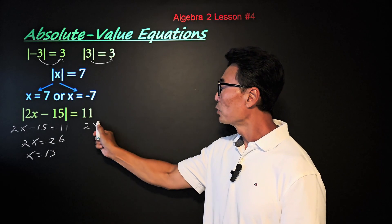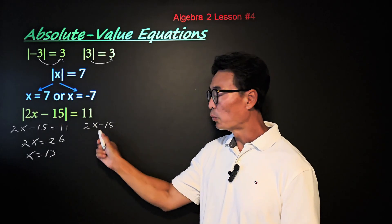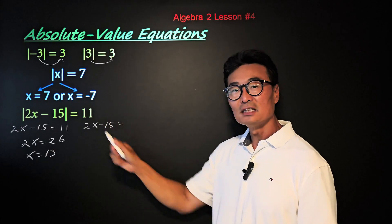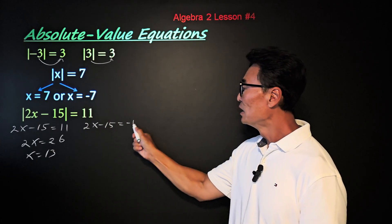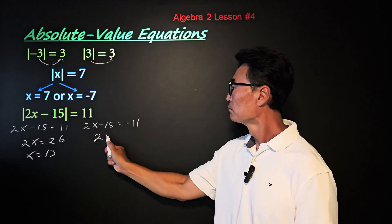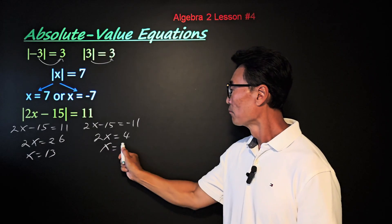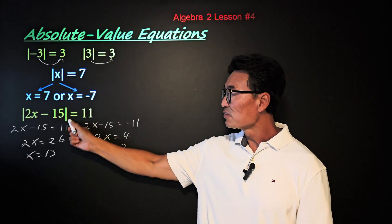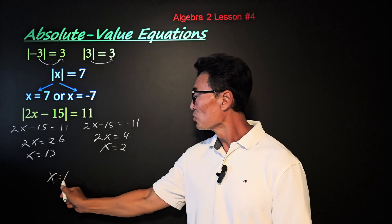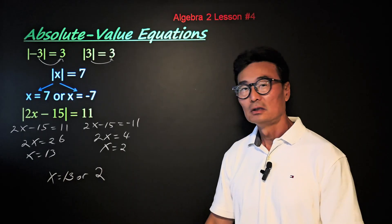Now we need to take care of the negative portion of the answer. Again, we leave what's in the absolute value sign the way it is. However, on the right side of the equal sign, we change it into negative 11. Therefore, the answer to this equation will be x equals 13 or 2.